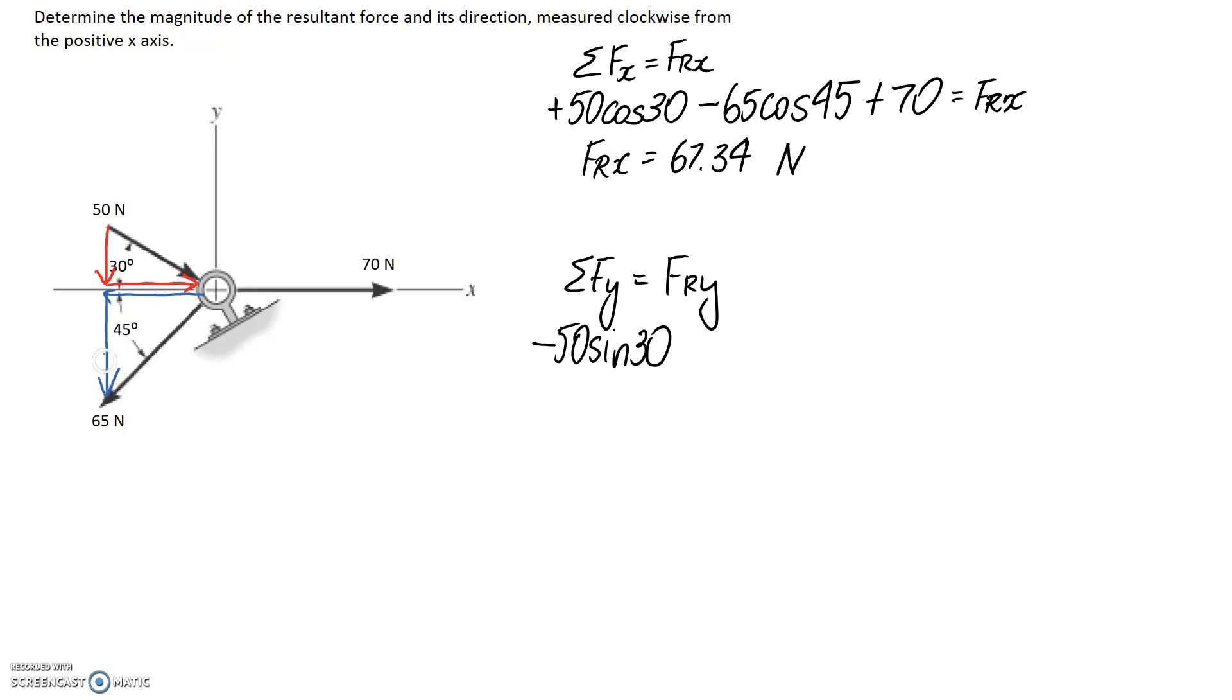The next one is this part here of the 65, so it's going to be 65, again it's the opposite side so it's going to be sin 45, and it's also pointing downwards in the negative y direction so it's going to go in as a negative. This one here didn't have a y component so it's not going to affect the equation. All of this is equal to the resultant in y, and if you type it in a calculator your answer ends up being about negative 70.96 newtons.